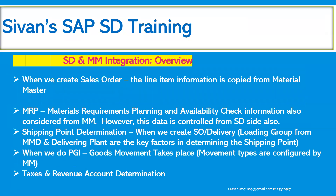The overview of SD and MM integration. Normally we all know that as an SD consultant, when we create a sales order, the entire line item information will be copied from material master data. Whether it is a single line item or multiple line items, all the line items information will be copied from the respective material master. MRP — materials requirement planning — and availability check information is also considered from MM material master data, though this data is controlled from the SD side also. The shipping point determination key factors, the delivering plant and the loading group, are considered from the material master data.